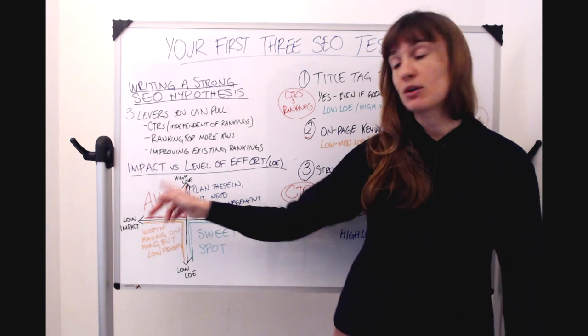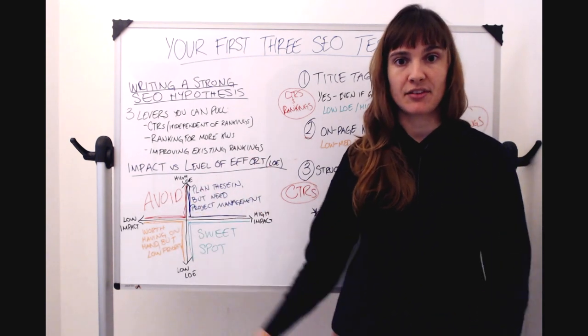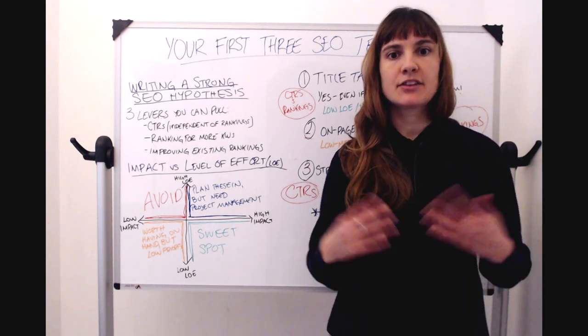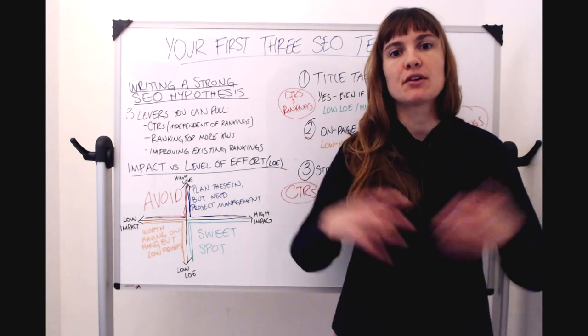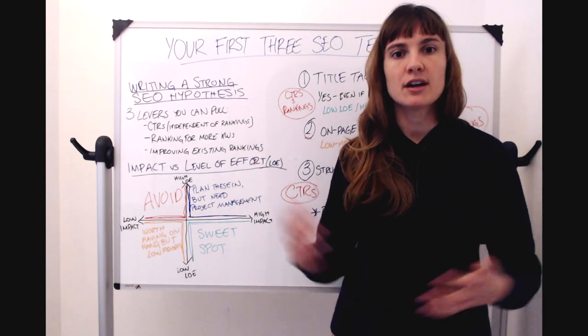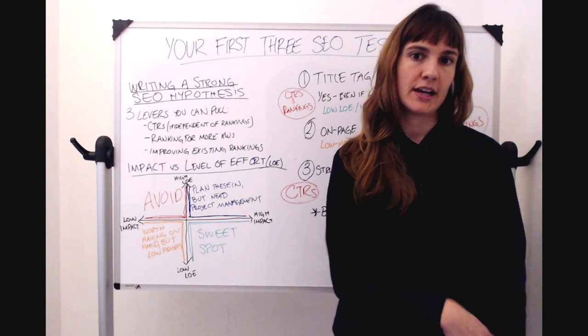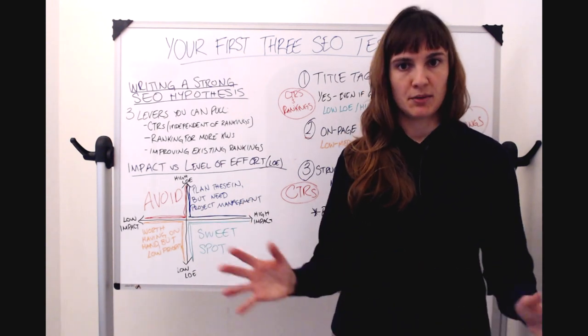In the upper left-hand quadrant, I put avoid. So those are high level of effort tests that are also low potential impact. These are tests that are going to have heavy uplift from your engineering team, but aren't likely to pull a core lever and therefore probably not a good test for you to run and probably not worth your time. Just rule these tests out, make them not even a priority.